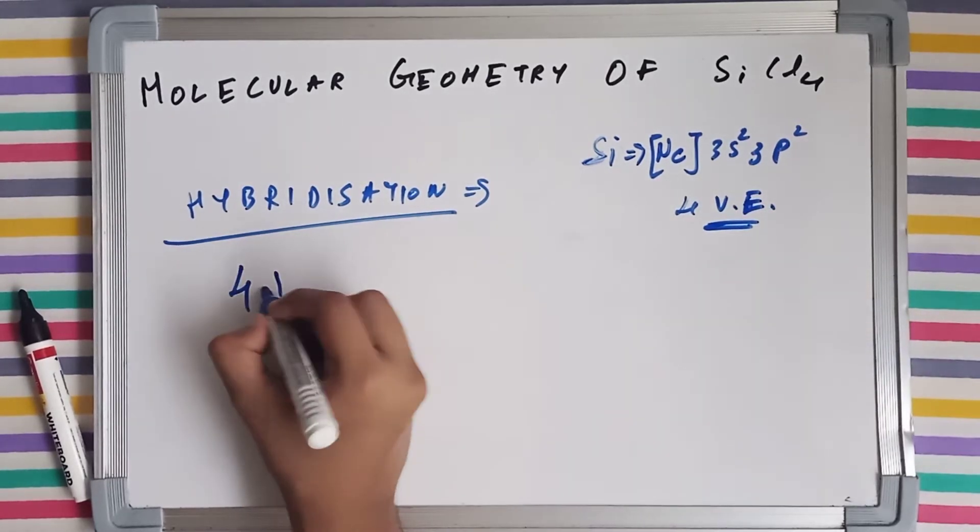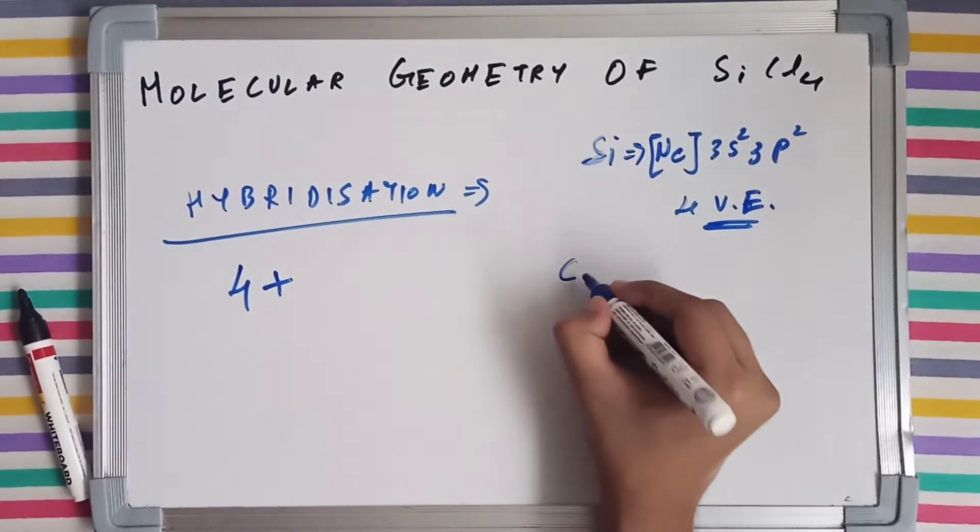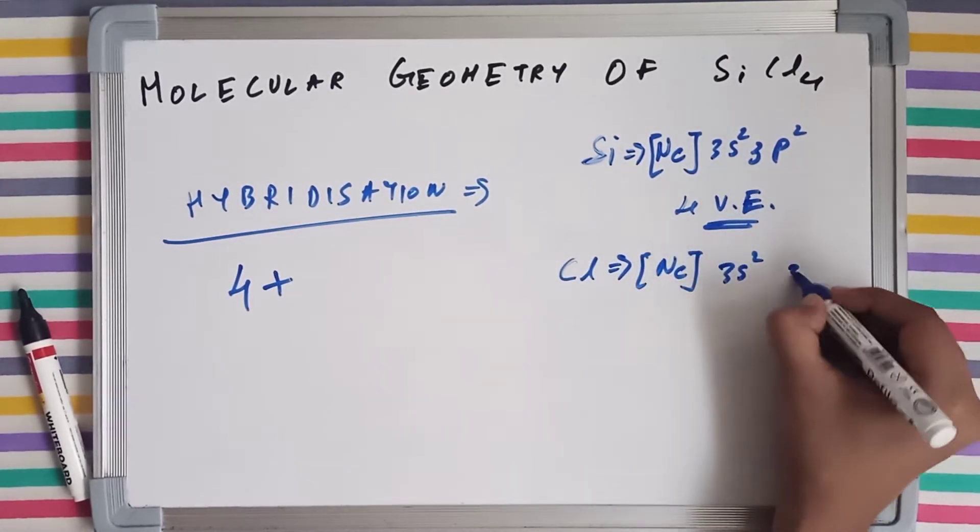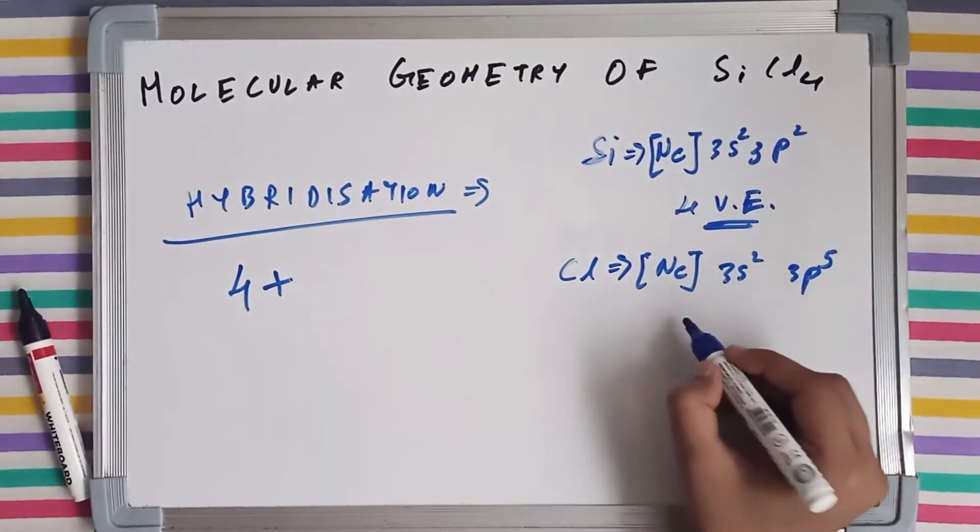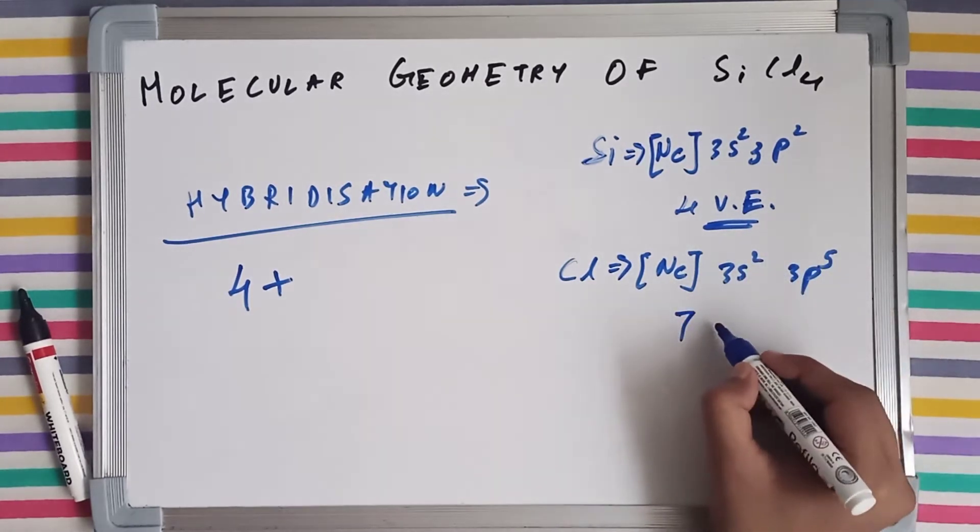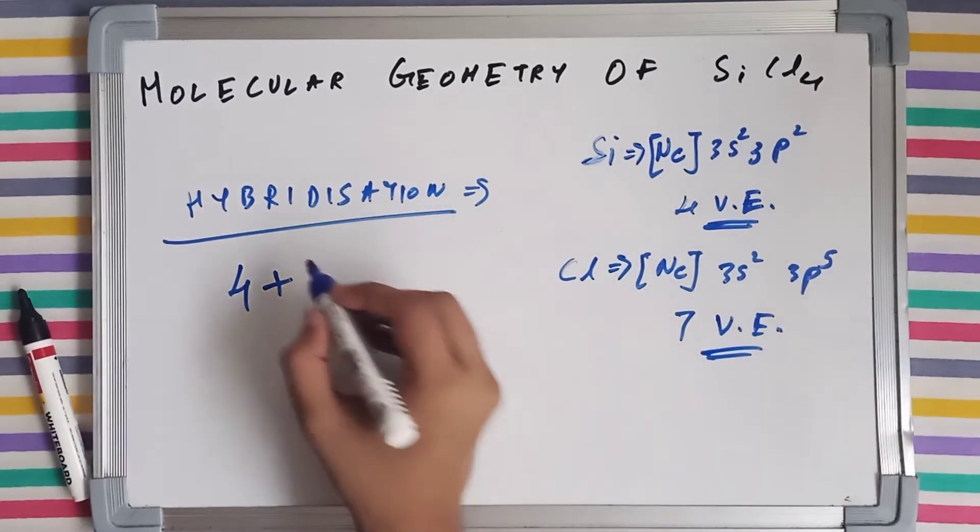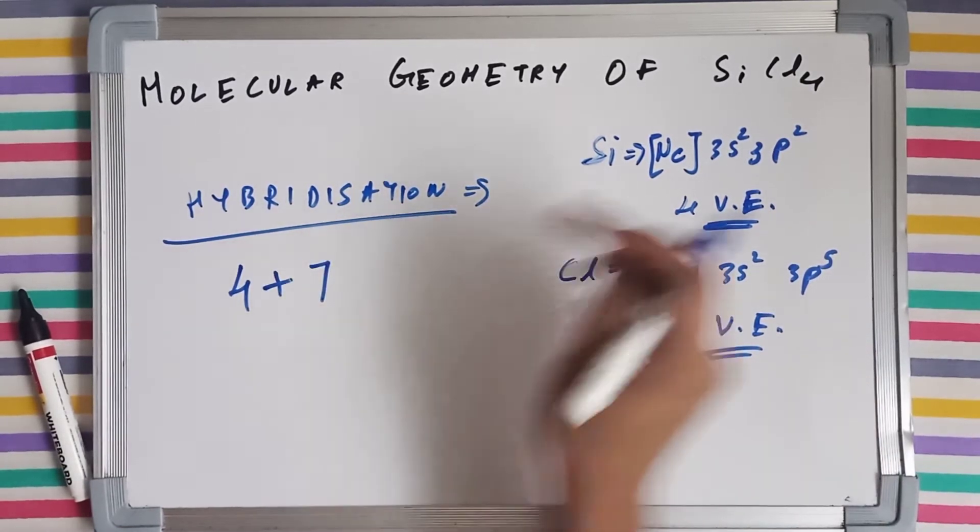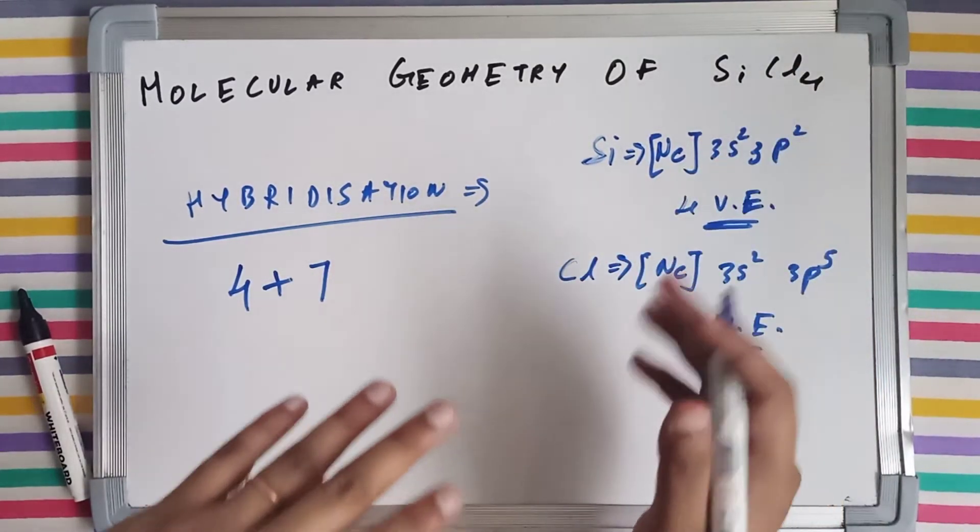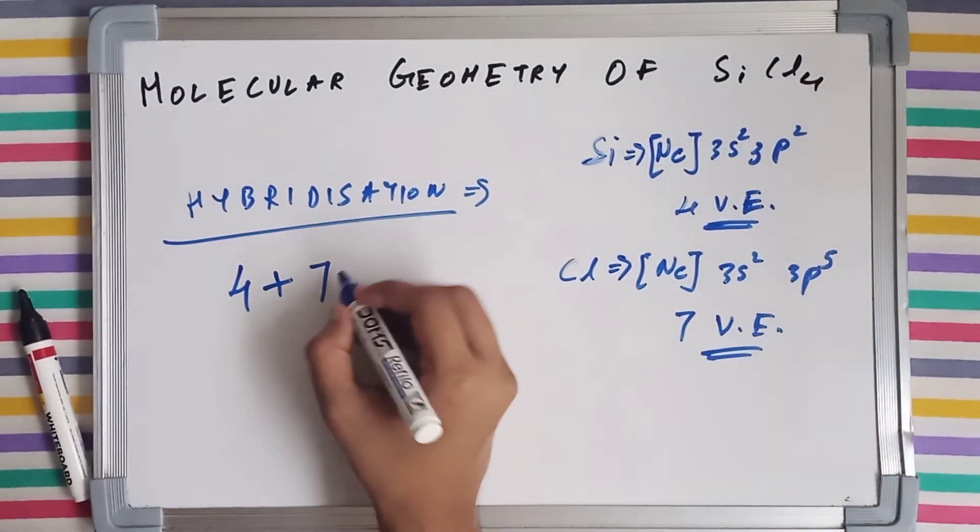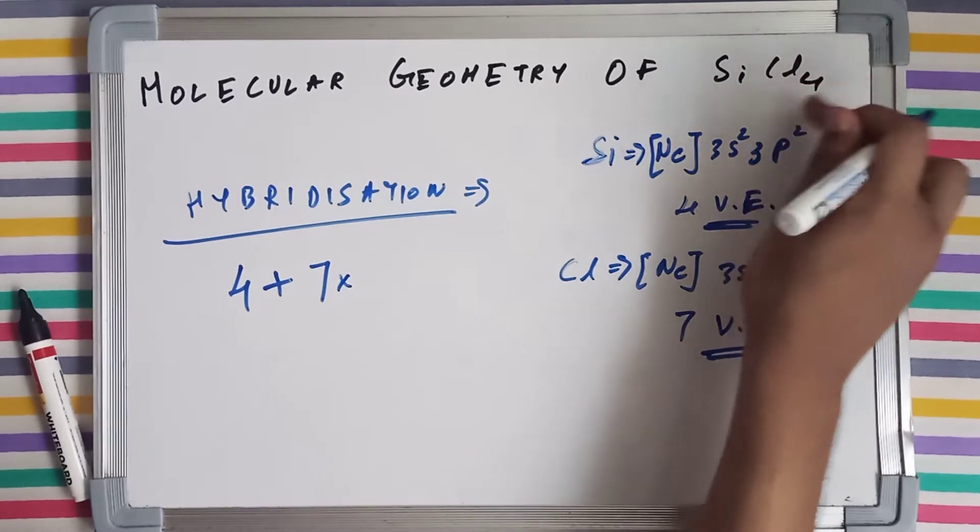So I am going to write 4 plus. Now let's talk about chlorine. Chlorine has also got an inert configuration of neon and then 3s2 and 3p5. 2 plus 5 is 7. So it has got 7 valence electrons. I am going to write 7 here. But since we have chlorine 4 in number, there are 4 atoms of chlorine here. So I am going to multiply the valence electron of chlorine, 7, into the number 4.